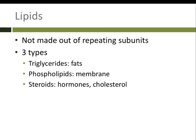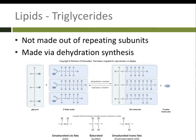Our last macromolecule is lipids, and these are not made out of repeating subunits. There are three different types: triglycerides, which are fats; phospholipids, which we see in the plasma membrane; and steroids, which are what hormones and cholesterol are made out of. Triglycerides are made by dehydration synthesis — we take a glycerol molecule (a sugar) and add three fatty acids to it, removing water molecules, ending up with a head and three fatty acid tails. We call it triglyceride because it has three tails.